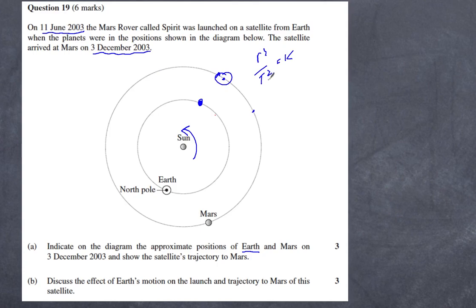If you did the answer over here then that would be fine, and that's because of Kepler's third law. Now it says also show the trajectory to Mars. You need to understand not only the positions of the planet six months later but how you might actually launch something. It's not going to go straight across like that nor is it going to go straight down like this.